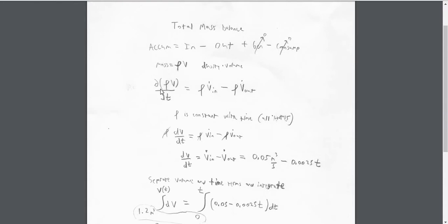The accumulation of mass is equal to the change in mass, or the volume times density, divided by the change in time. So this is a derivative of mass with respect to time.